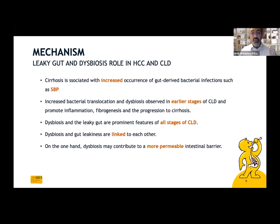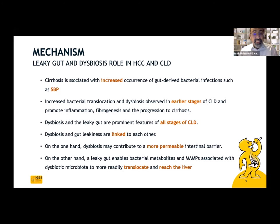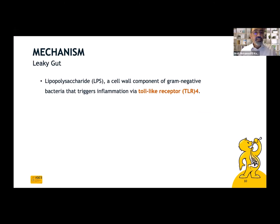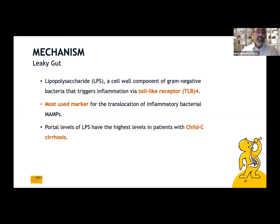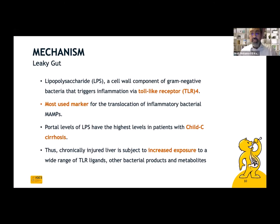On the one hand, dysbiosis may contribute to a more permeable intestinal barrier. On the other hand, a leaky gut enables bacterial metabolites and MAMPs associated with dysbiotic microbiota to more readily translocate and reach the liver. Lipopolysaccharide is a key component of gram-negative bacteria that triggers inflammation through toll-like receptor 4 (TLR4). The portal levels of lipopolysaccharides are highest in patients with Child C cirrhosis, meaning chronically injured liver is subject to increased exposure to a wide range of TLR ligands and bacterial metabolites.